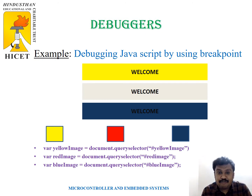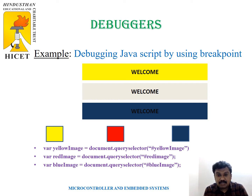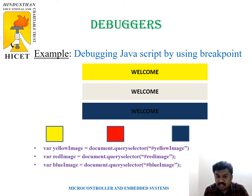Let's see an example of debugging. Here we have a JavaScript example using a breakpoint. You have three text boxes with a welcome message in them, and under that, three different buttons. If you click on the yellow button, the first text box changes to yellow. If you click on red, the middle one should change to red. The last one — blue — the concerned text box's welcome message turns to blue.